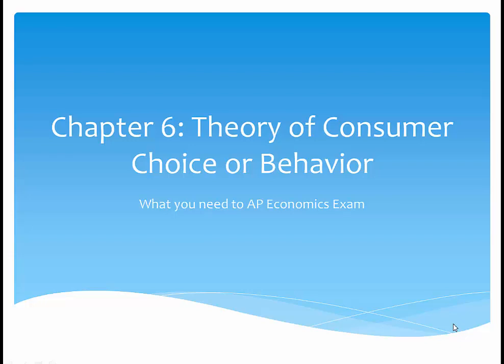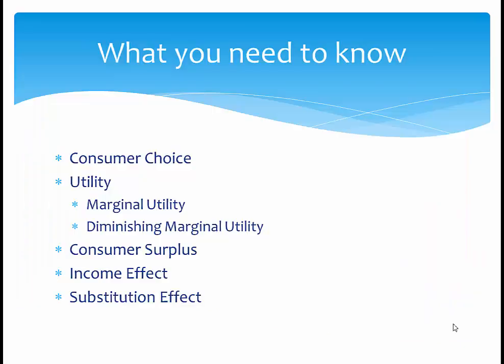In this video, I will be covering Chapter 6 of the Barron's AP Economics book. In this chapter, I will talk about what you need to know for the AP exam, both micro and macro. Here's what you need to know: consumer choice, utility, marginal utility, the law of diminishing marginal utility, consumer surplus, income effect, and substitution effect.